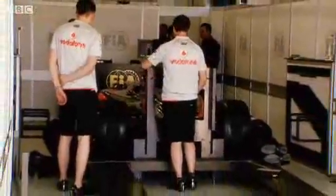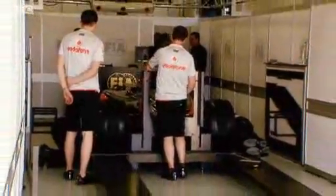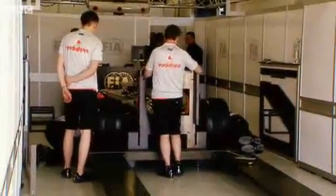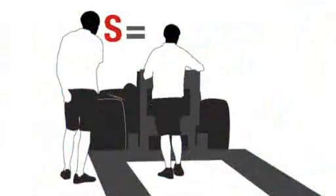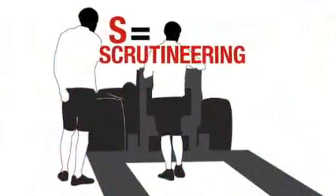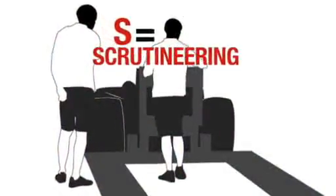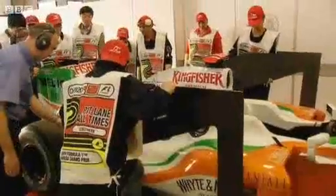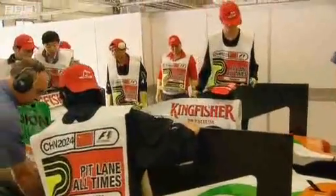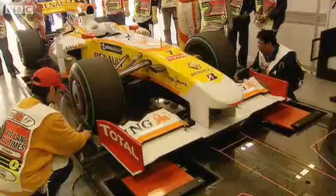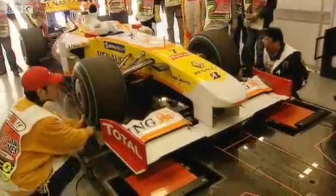Three days before every Grand Prix, each car must pass scrutineering checks for both safety and eligibility — think of it as a posh MOT. Dimensions and weights are thoroughly checked and loads are applied to aerodynamic parts to make sure they don't flex too much.